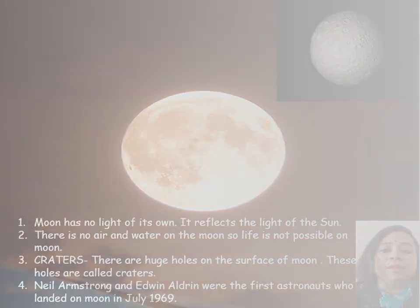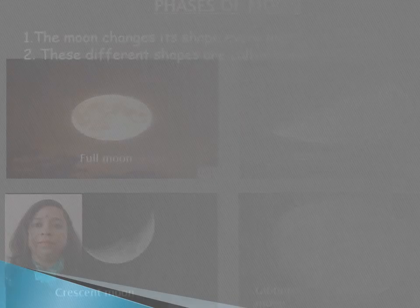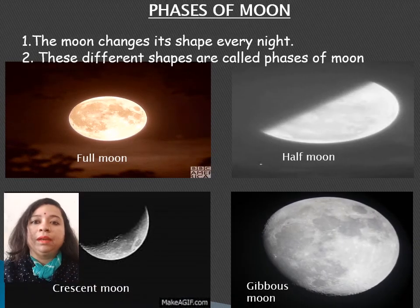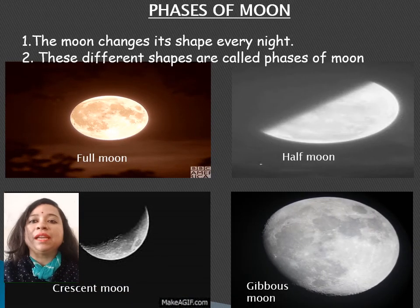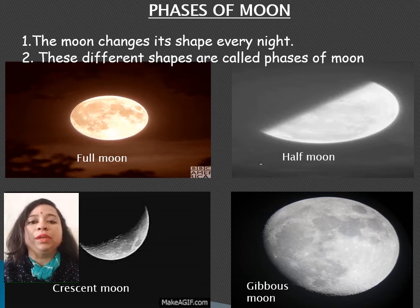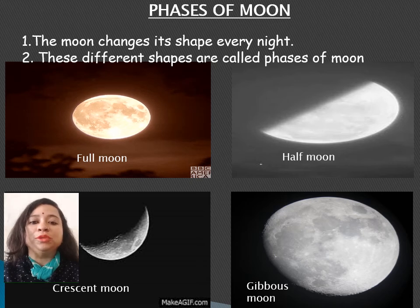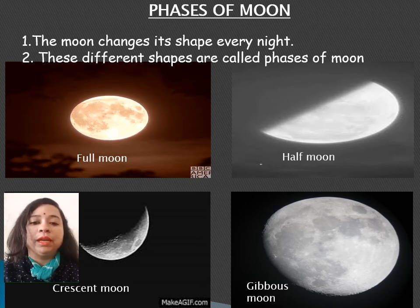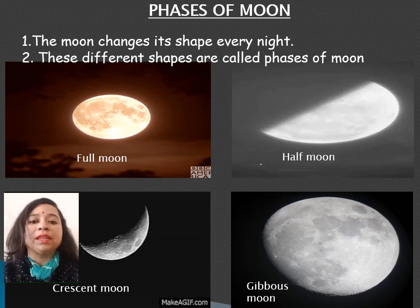The moon changes its shape every night. These different shapes are called phases of moon, like full moon day, half moon day, crescent, and gibbous moon. In Hindi, we also call them amavasya and poornima.